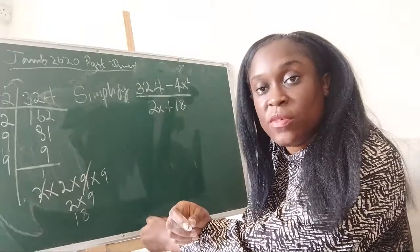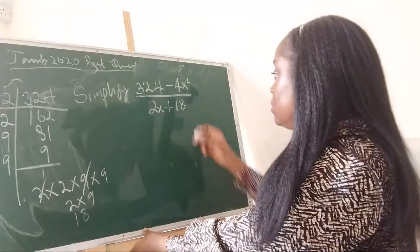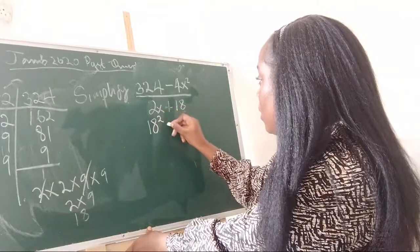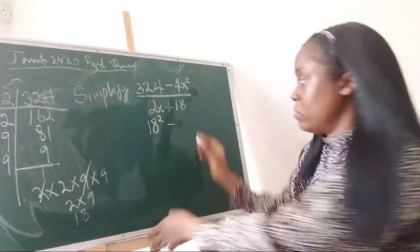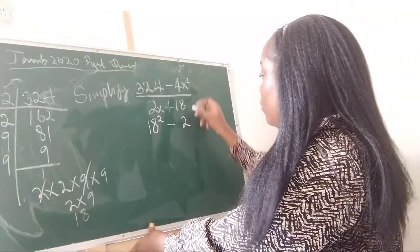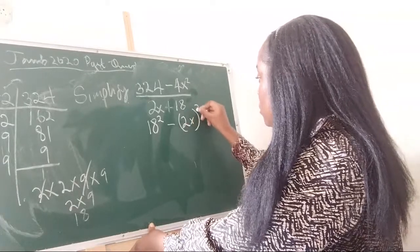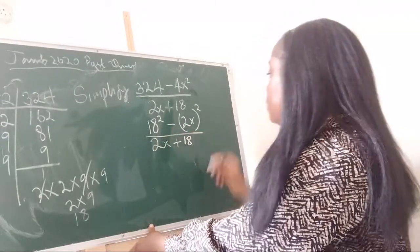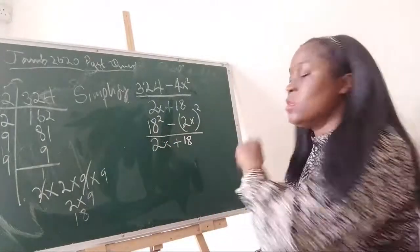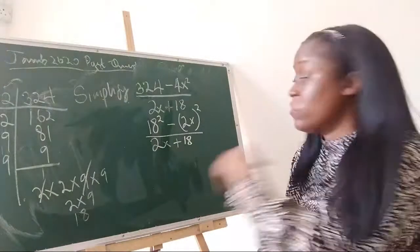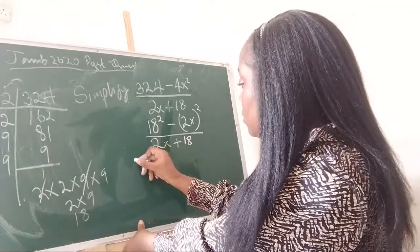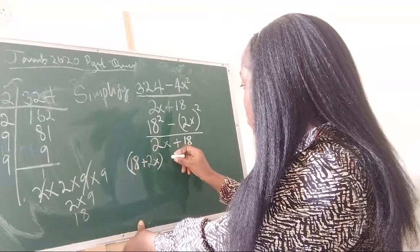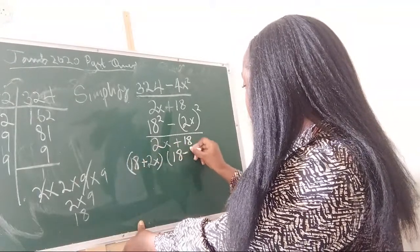We'll substitute 18 here. We'll say 18² minus 2x² — turning everything into squares. All over 2x plus 18. Now, if I break the numerator down as a difference of squares, I get (18 + 2x)(18 − 2x). The denominator is 2x plus 18, which is the same as 18 plus 2x.